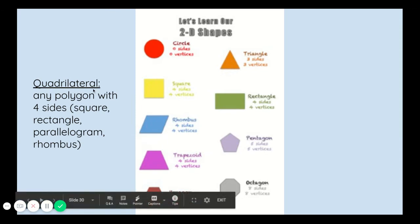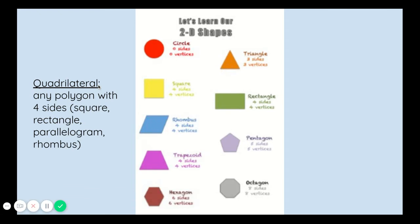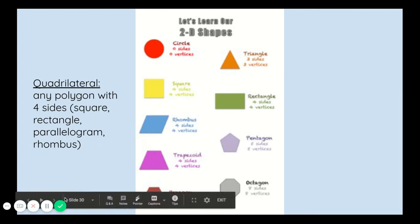Another important skill we learned this year was the word quadrilateral. Quad means four, and a quadrilateral is any polygon, a flat shape with four sides. So a square, a rectangle, a parallelogram, and a rhombus are all examples of quadrilaterals.